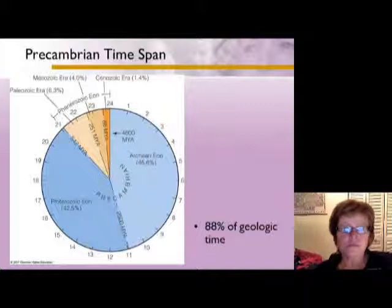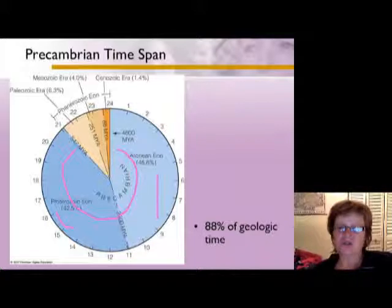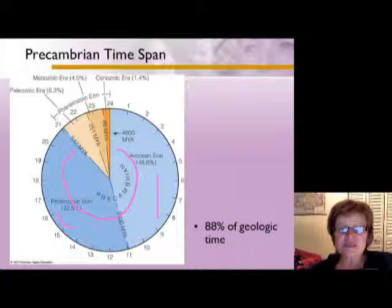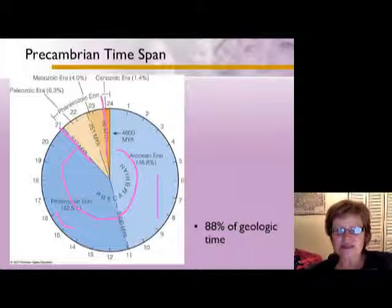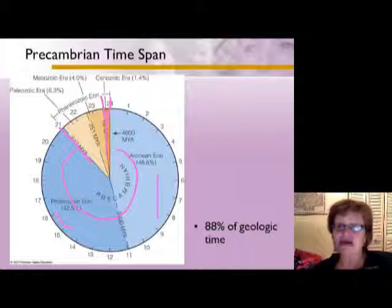The Precambrian is divided into the Archean, the Proterozoic, and right before that the Hadean — which is essentially before the Earth became a planet. The 540 million year mark represents the beginning of the Phanerozoic, and the very last 66 million years — the Cenozoic — is just a tiny sliver. As you can see, most of geologic time is basically missing without information.